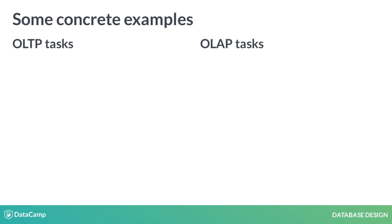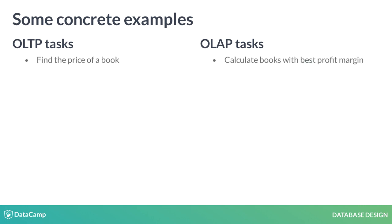Before going into formal definitions, let's look at some use cases of each. Say you are in charge of data management at a bookstore. You would use an OLTP approach to keep track of the prices of books, while to analyze the most profitable books, an OLAP approach would be more appropriate. To keep track of all customers' transactions, you would use an OLTP approach to insert sales as customers finish paying.